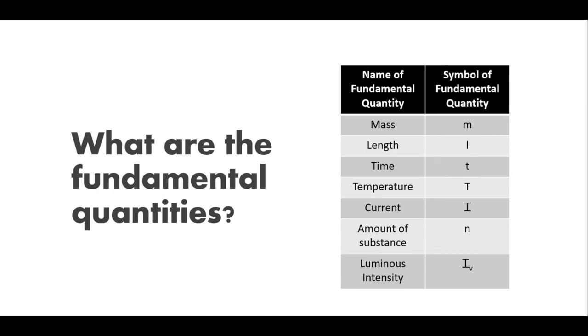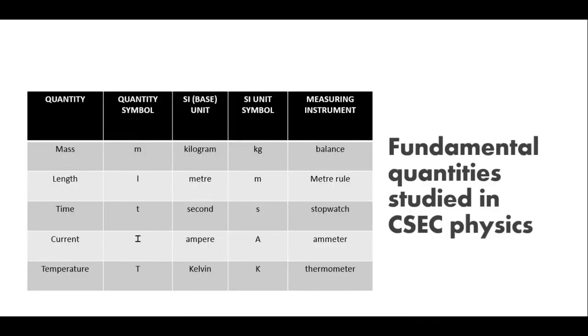Current, which is kind of weirdly expressed with an I. Amount of substance, which we use N and is measured in moles - you'll see more of that in chemistry. And luminous intensity, which is I subscript V. For the purpose of the CSEC syllabus, we're only focusing on five.